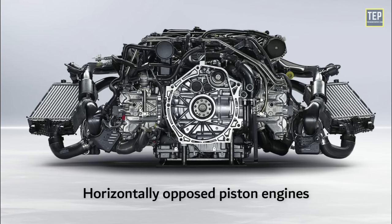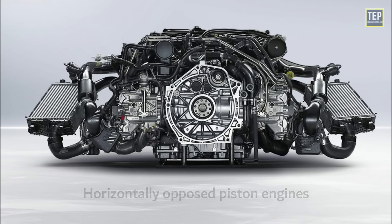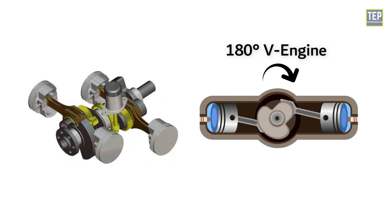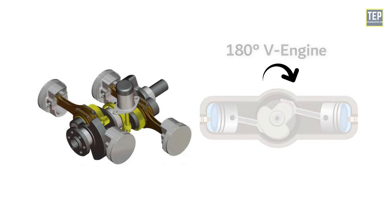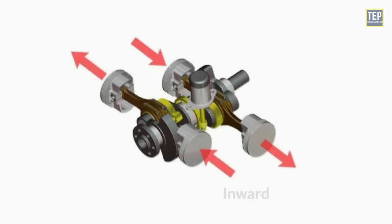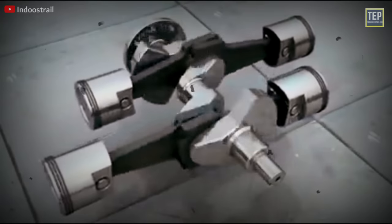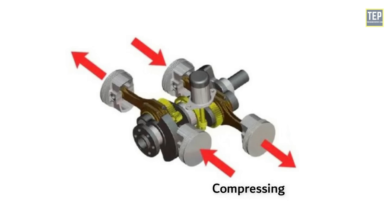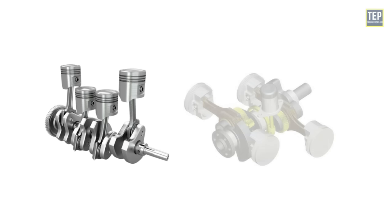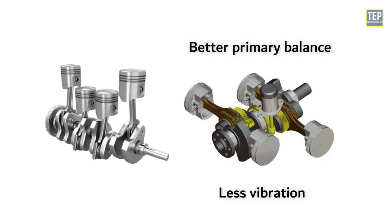Flat engines are horizontally opposed piston engines and have been around since the 1890s. A flat engine is essentially a 180-degree V engine that works similarly to any other V engine. Each pair of cylinders shares a single crank pin, so as one piston moves inward the other moves outward. The two opposing pistons move in the same direction, but one is compressing and the other is combusting — one piston will be at top dead center and the other at bottom dead center.